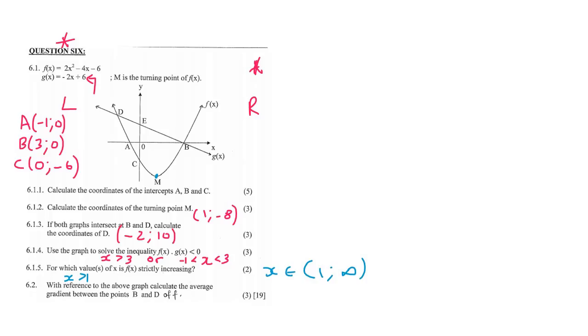Last question, 6.2: With reference to the above graph, calculate the average gradient between B and D. This whole phrase 'average gradient' confuses students, but it mustn't, because gradient is just y2 minus y1 over x2 minus x1. Technically this is for a straight line, but if they ask you to do it between B and D, you still use this formula. When they ask you to work out the average gradient, you are still going to use this formula - nothing changes.